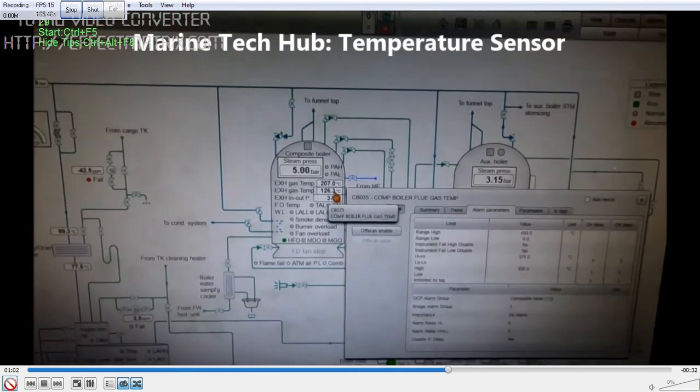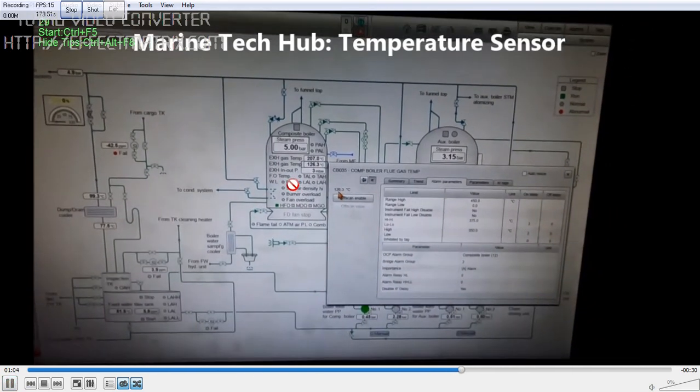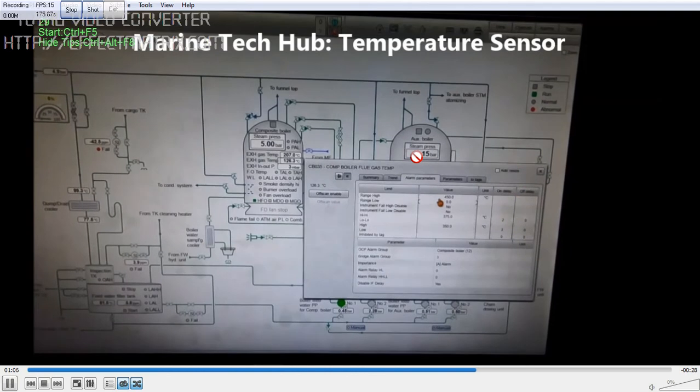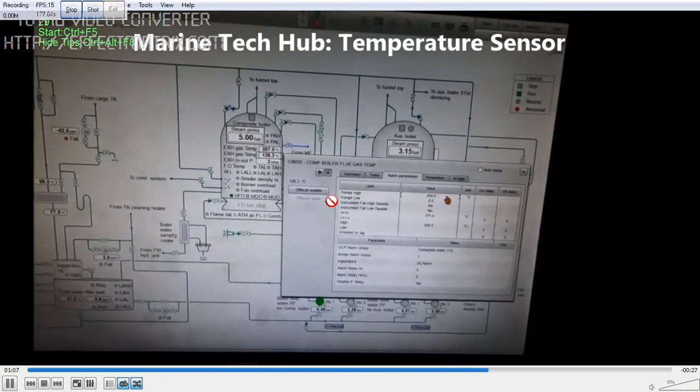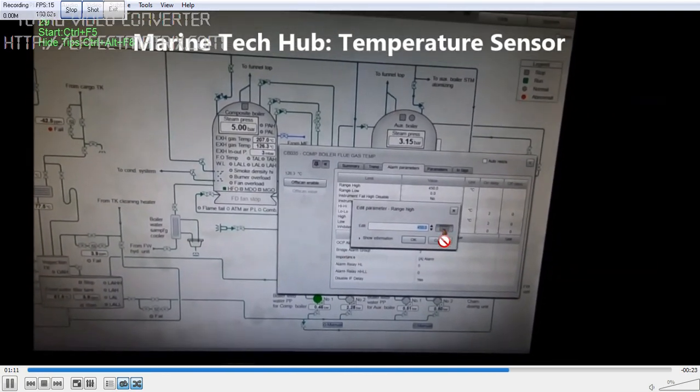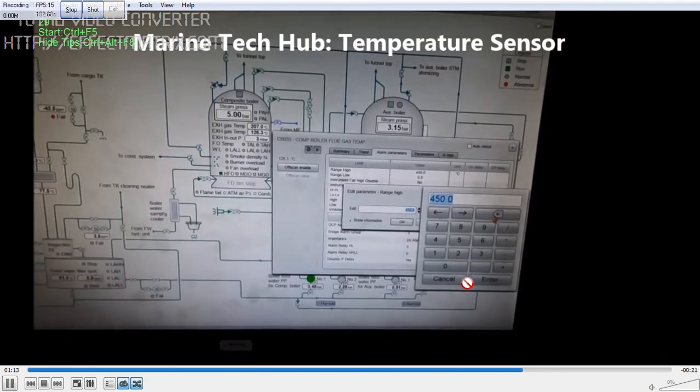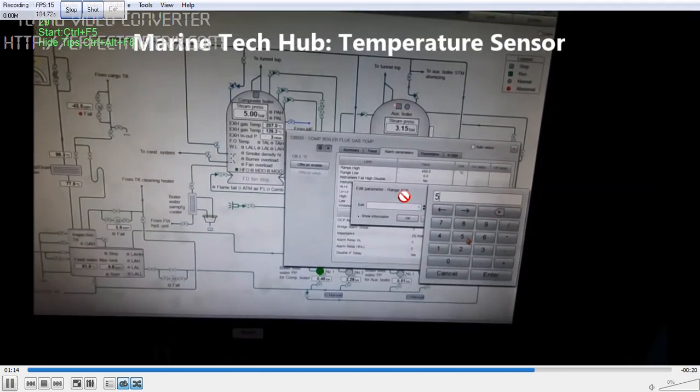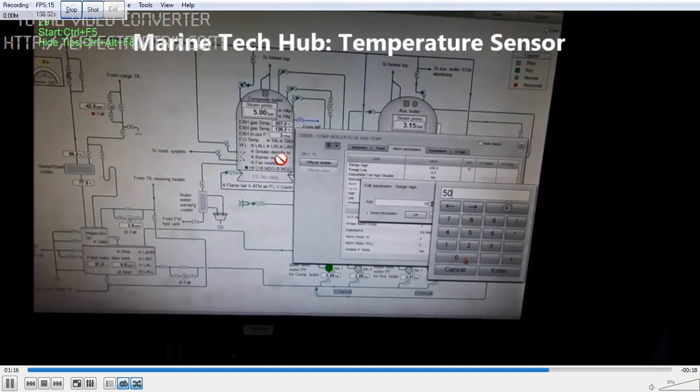So this is very important. So 126.3 here. Again when I change back to 500, you will get back the correct reading. So for electrical officer on board the ship, this is very important. If you change the correct range and change the alarm setting. Once I change back to 500, you will get the right reading again.